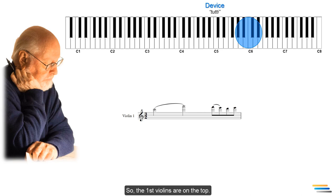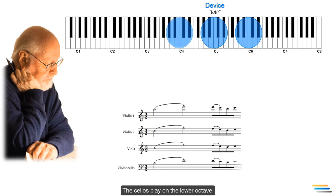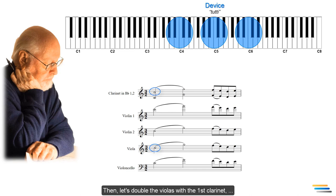So, the first violins are on the top. The second violins and violas are in the middle. The cellos play on the lower octave. Then, let's double the violas with the first clarinet, while the cellos with the second clarinet.